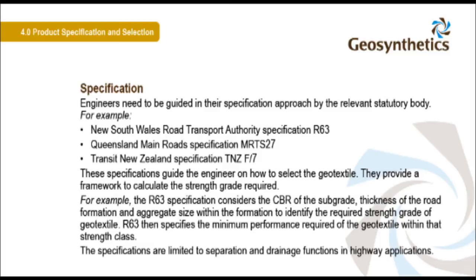For example, New South Wales Road Transport Authority specification R63, Queensland Main Roads specification MRTS 27, and Transit New Zealand specification TNZ F7. These specifications guide the engineer on how to select the geotextile and provide a framework to calculate the required strength grade.